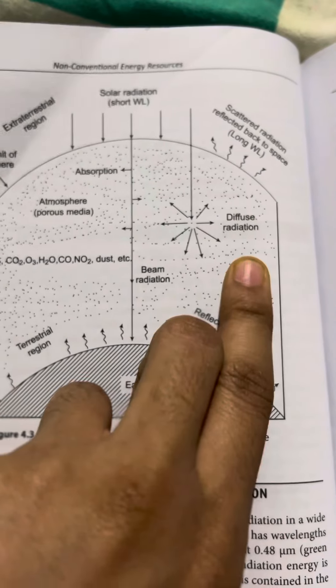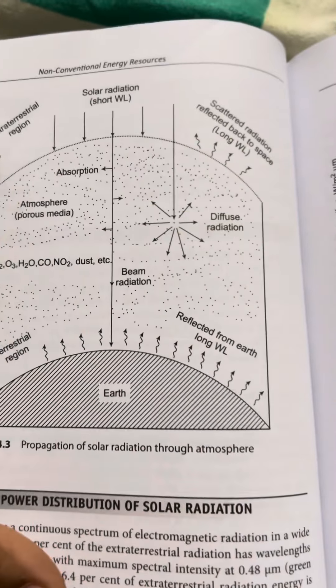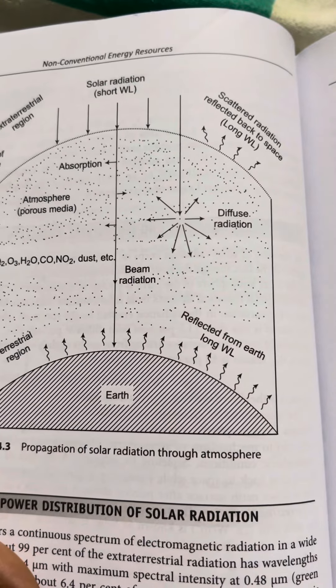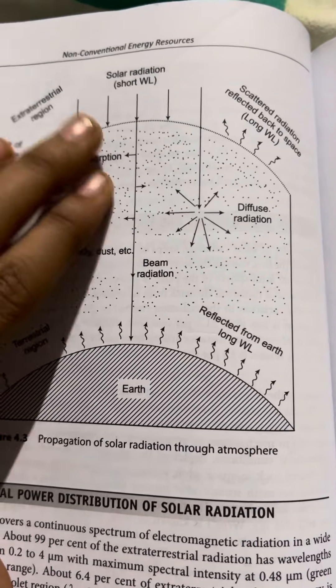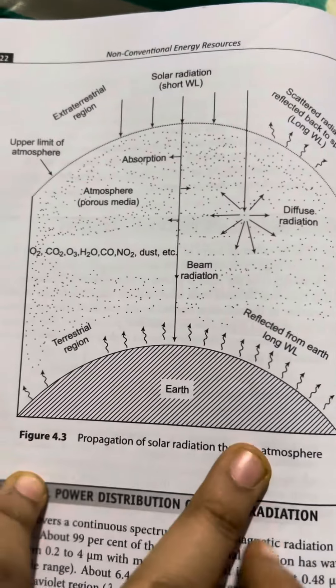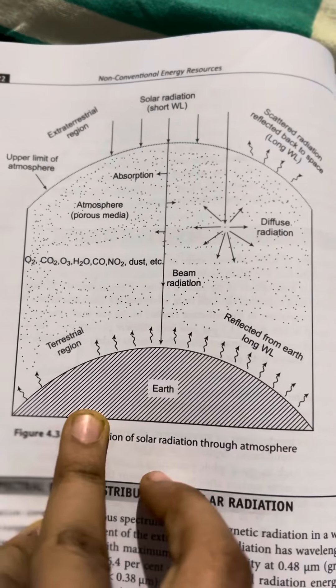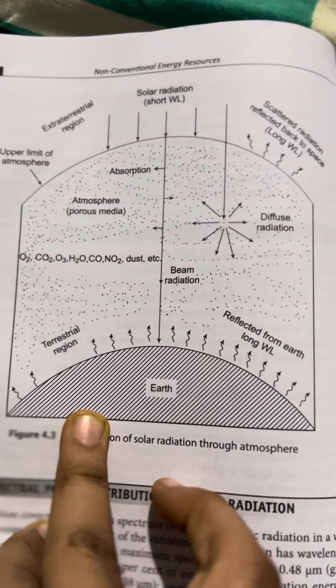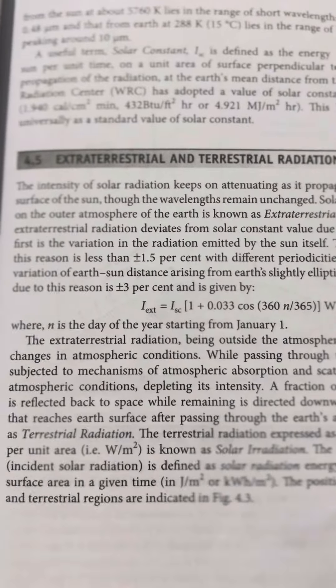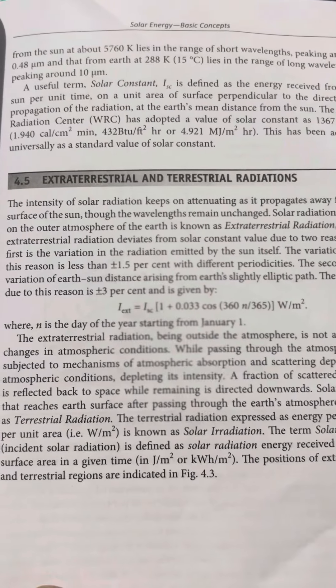Diffused and scattered radiation is reflected back to space. This is the Earth's surface. The two main regions discussed are the extraterrestrial and the terrestrial region.